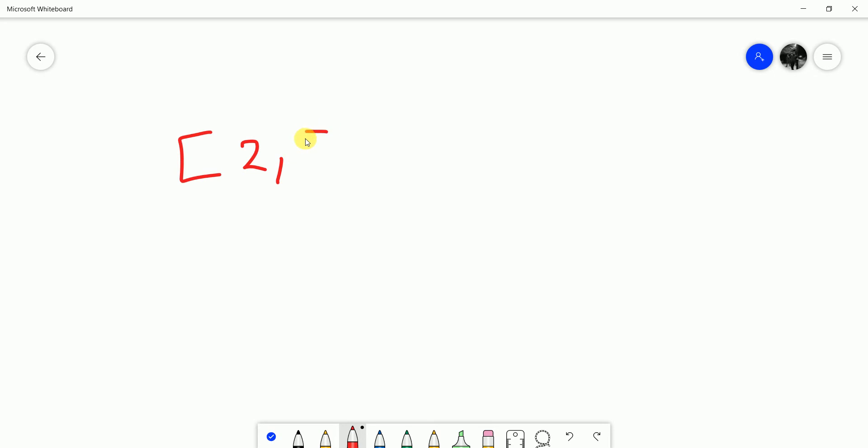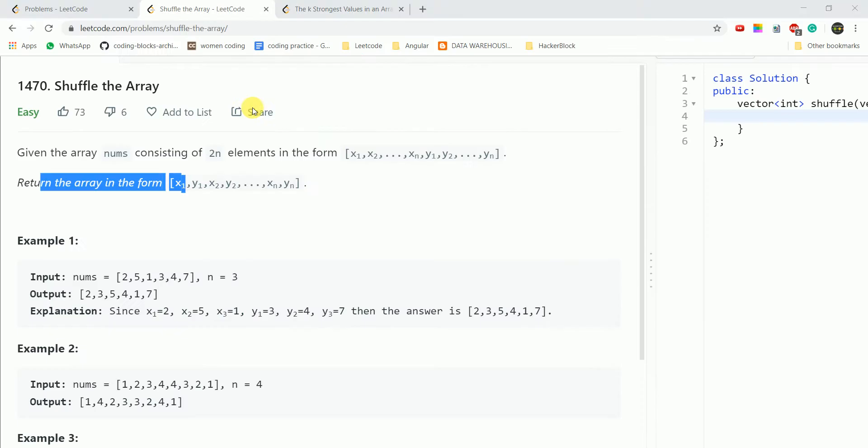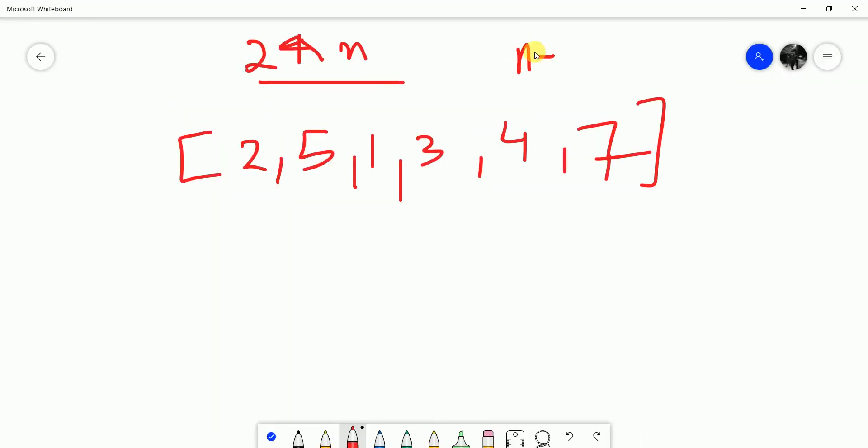We are given that it is a 2 into n sized array and we are provided with the value of n. What we need to do is construct a resultant array where we have a combination such that we have the first digit and the n plus 1 ith digit. So we have 2 then 3 in the resultant vector. We have the ith character followed by the n plus ith character.